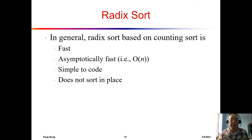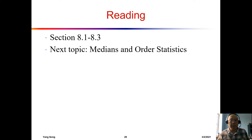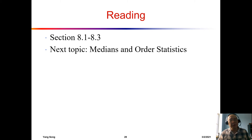To review what we have learned about radix sort: it is indeed a fast algorithm and O(N). It's simple to code, but it doesn't sort in place. And the worst thing about radix sort is that it's not a general-purpose sorting algorithm. After this lecture, you want to read textbook sections 8.1 to 8.3. In the next class, we want to move on to something other than sorting algorithms — we are talking about the median and other order statistics. That's it for today, and I will see you in the next class. Bye-bye.